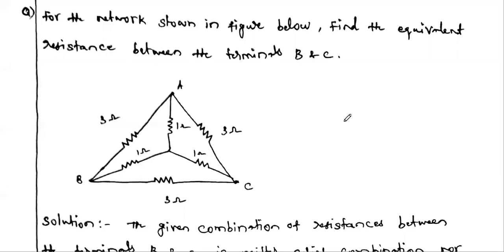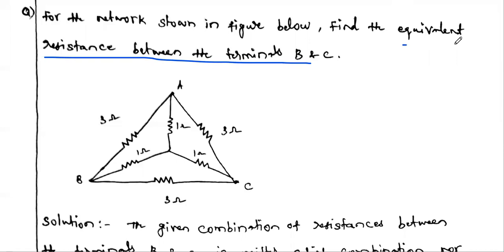Welcome to my channel. Today we are going to solve one circuit analysis problem using the star to delta and delta to star transformation technique. The question is: for the network shown in the figure below, find the equivalent resistance between terminals B and C.